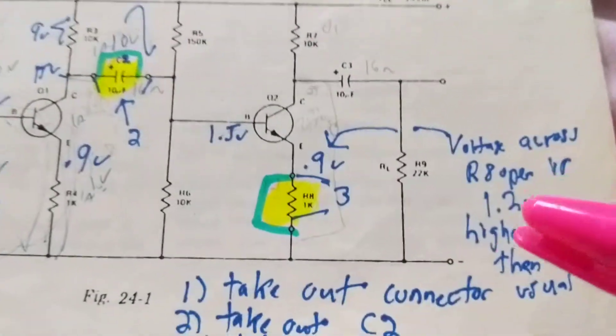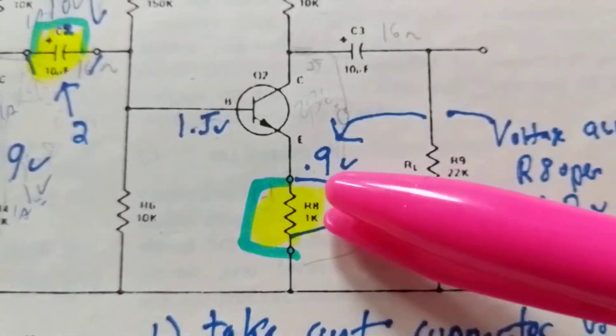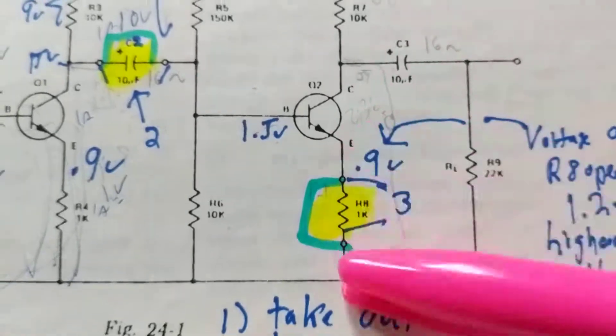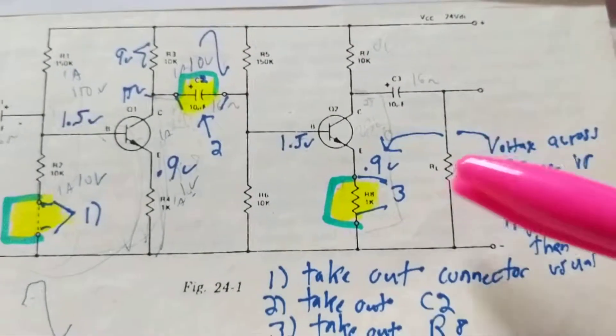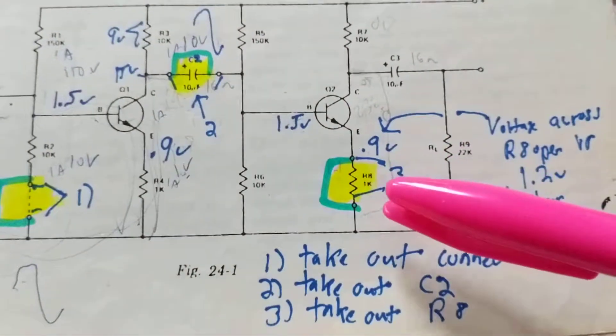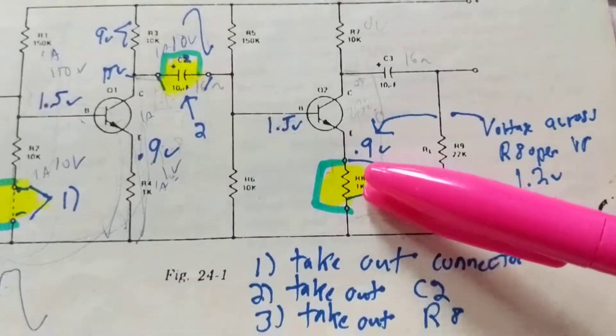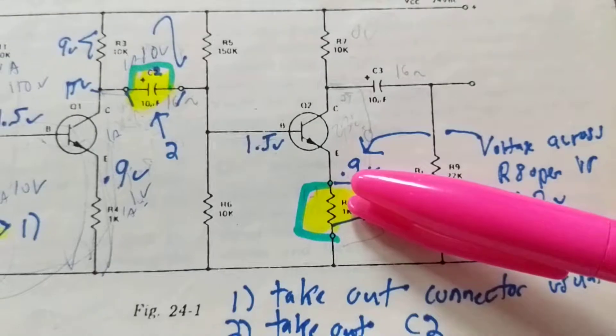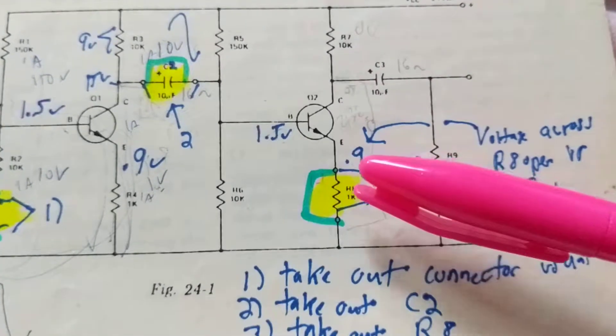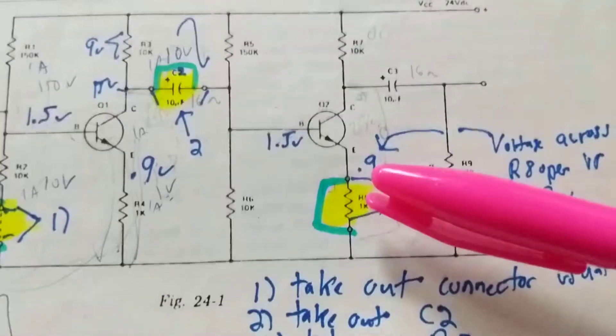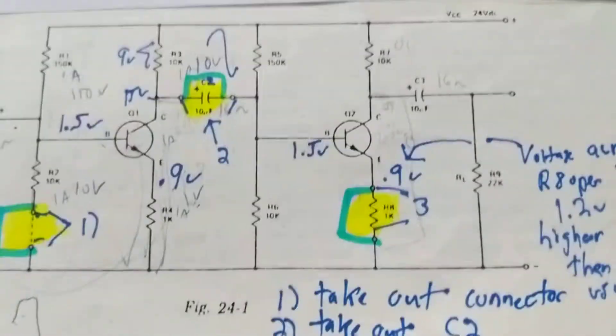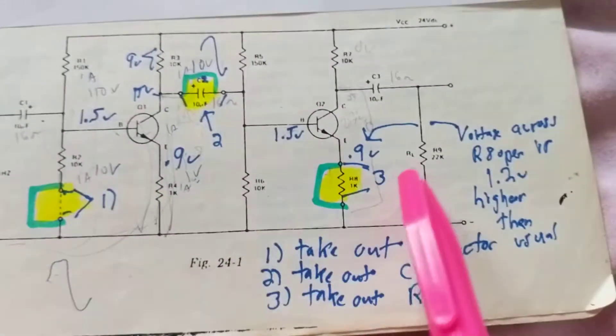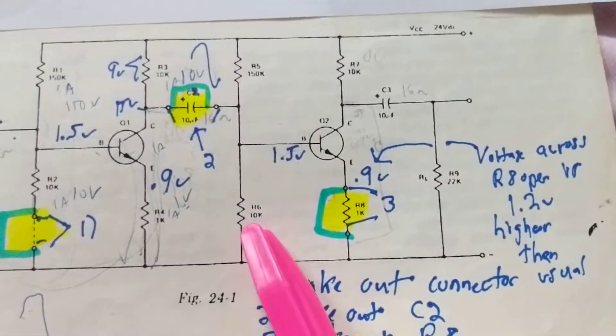What I'm going to do is I'm going to take out R8, one kilo ohm resistor in the emitter circuit right here. I'm going to take it out. And I asked the viewers, how would you go about troubleshooting it? I got various emails on what people thought and what they responded.